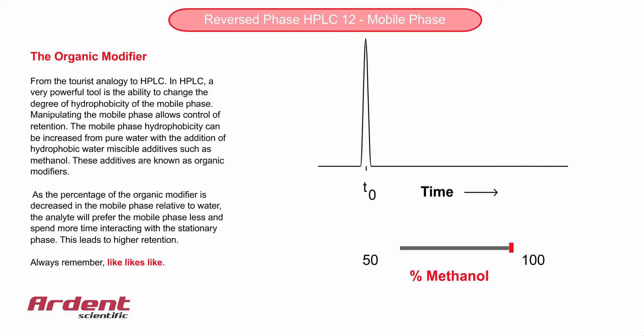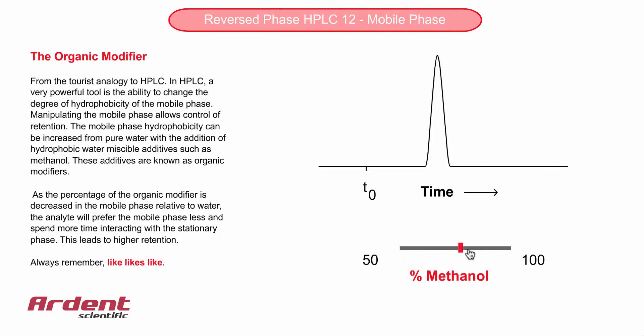As we have already noted, the mobile phase in reversed phase HPLC must be hydrophilic, and this naturally leads us to water. However, to make the water less hydrophilic, we can add solvents which will still mix with the water, but also increase the degree of hydrophobicity of the mobile phase.